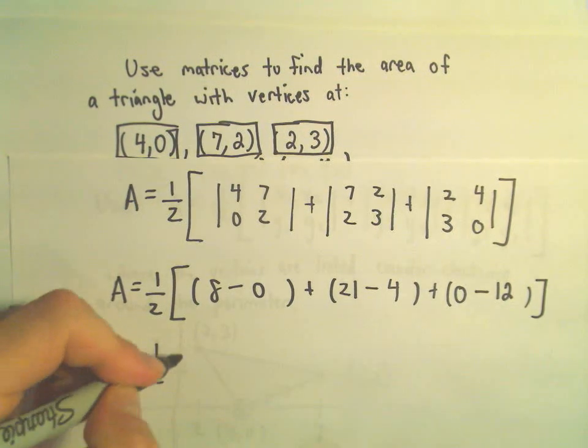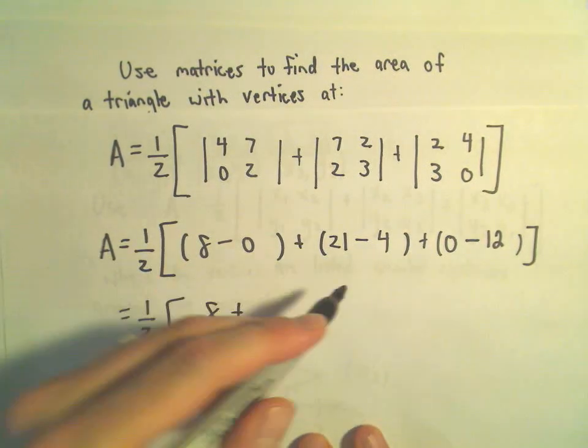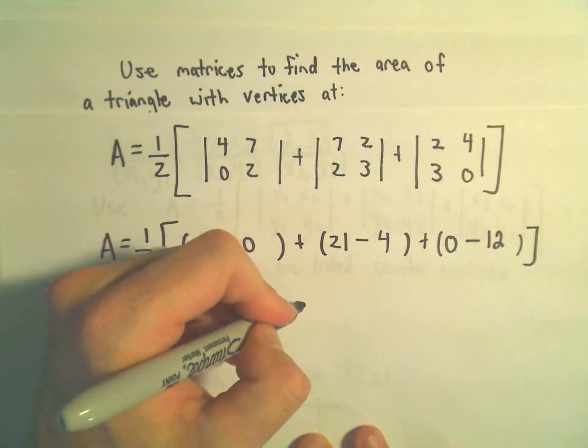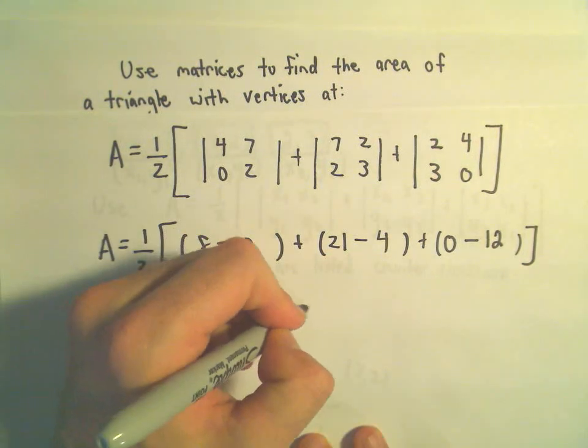Alright, so we get 1 half, it looks like inside our brackets we have 8 plus, let's see, 21 minus 4 is going to be 17. 0 minus 12 is going to be negative 12.